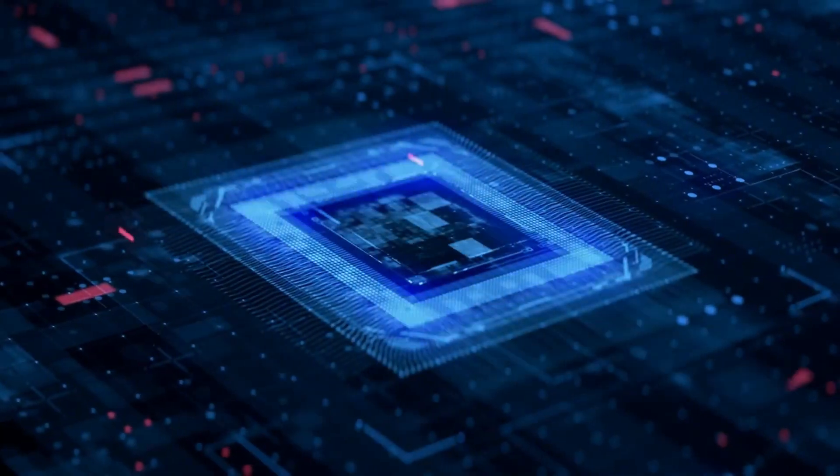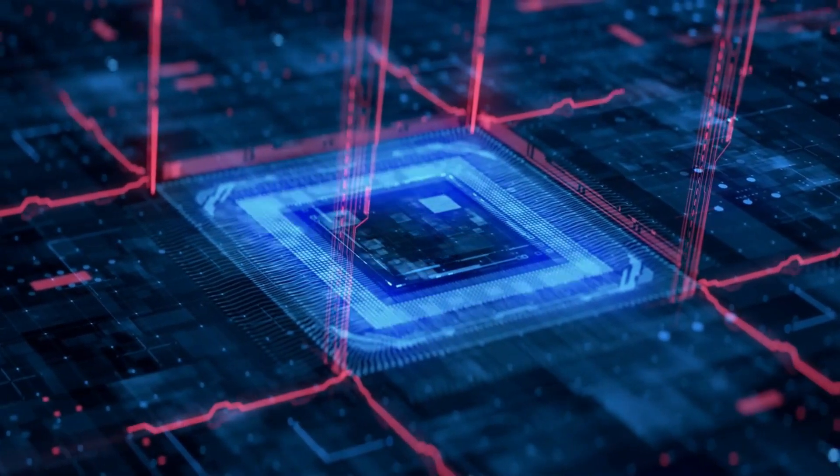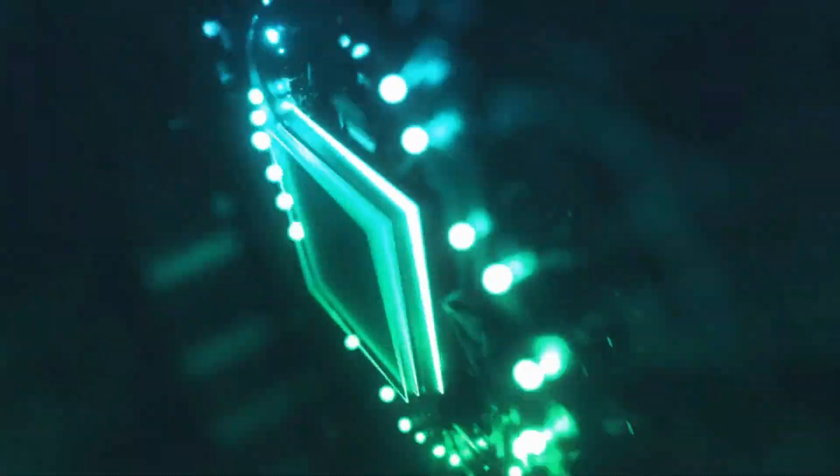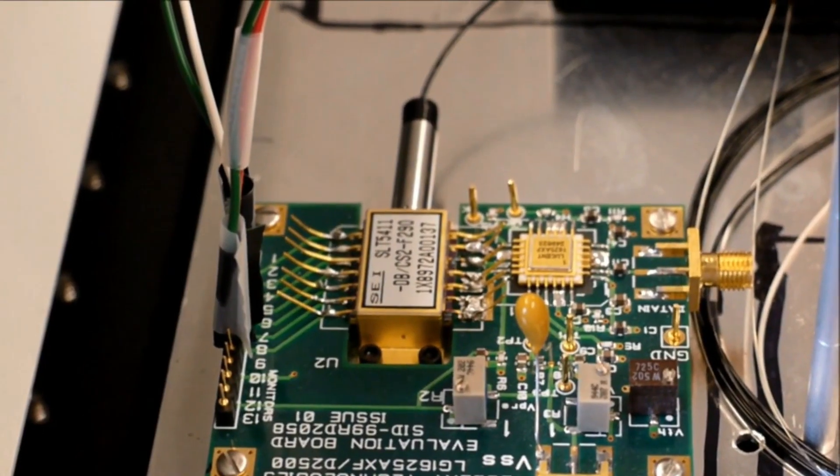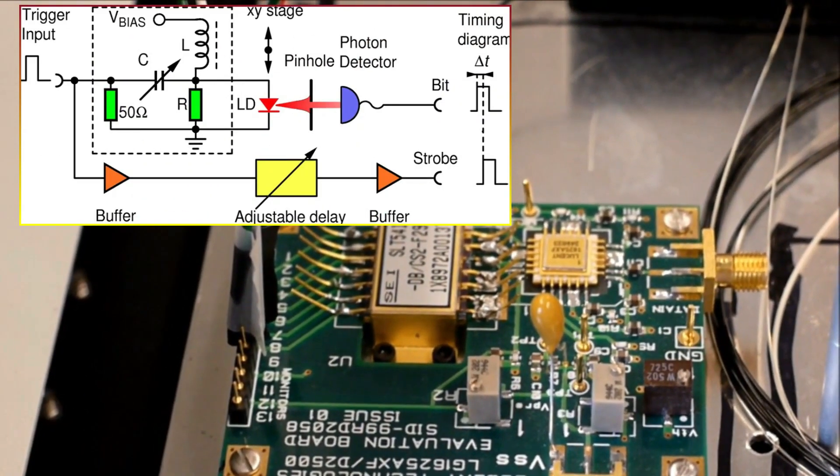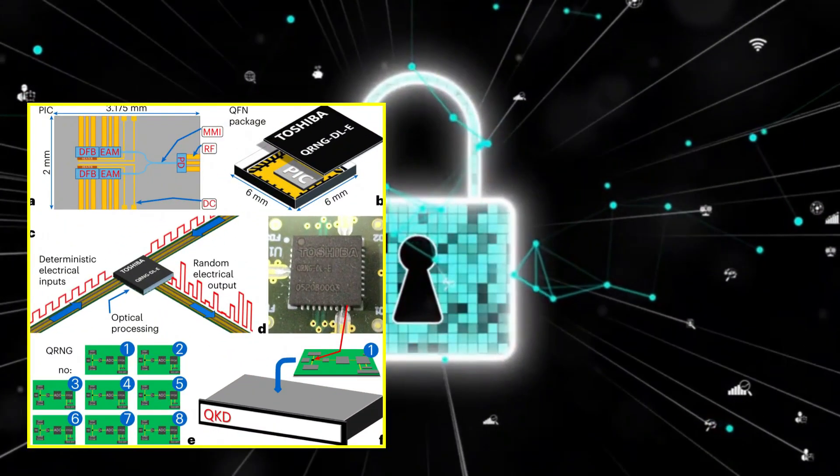The path forward hinges on three questions. One, is the chip creating anomalies or revealing pre-existing ones? Quantum theory allows for retrocausality, where future events influence the past. The chip might be illuminating hidden facets of reality, rather than distorting it.